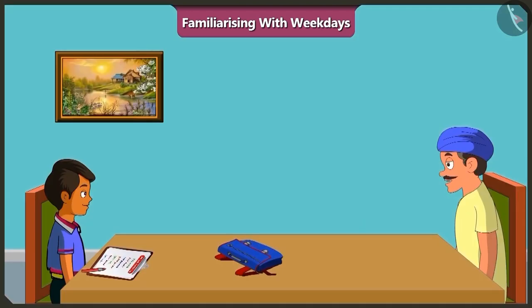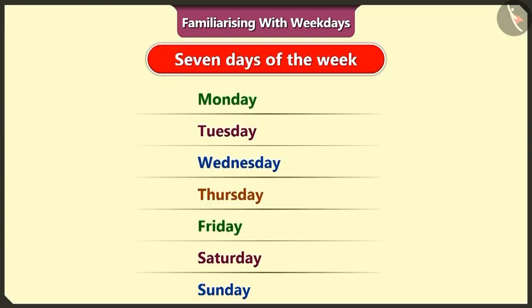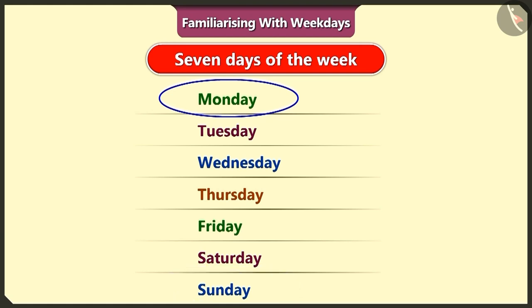Yesterday was which day of the week? Yesterday means the day that has gone, or the day before today. Today is Monday, so the day before that was Sunday. Correct. Now mark a circle on Sunday and write yesterday next to it.